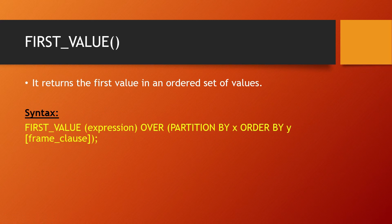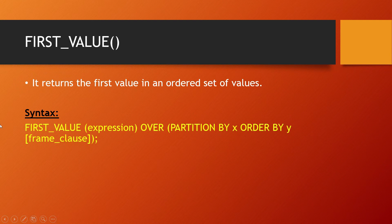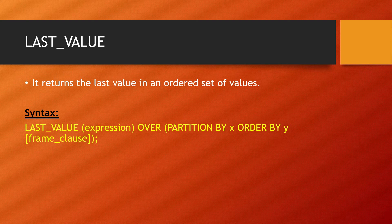First value. It returns the first value in an ordered set of values. The syntax is: FIRST_VALUE(expression) OVER (PARTITION BY x ORDER BY y [frame clause]). The frame clause defines the range, such as from unbounded preceding to unbounded following. Last value is just the opposite — it returns the last value in an ordered set of values, and the syntax is the same.